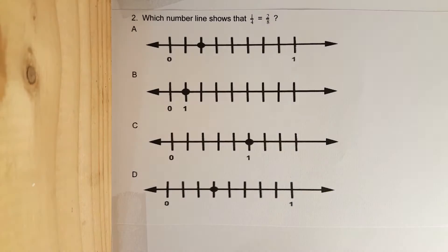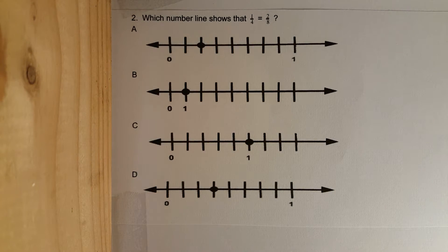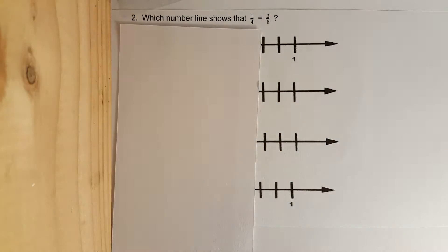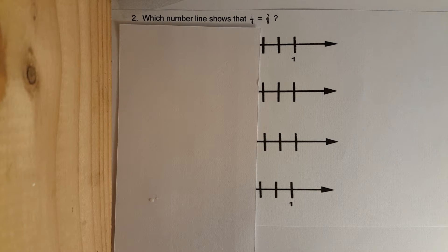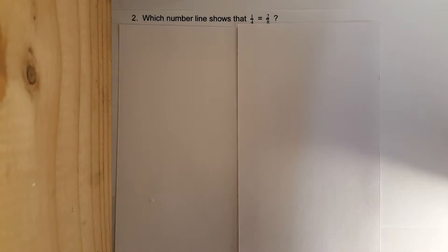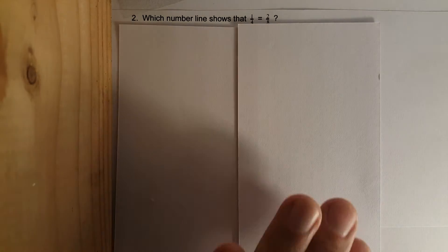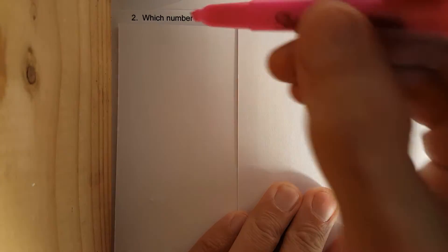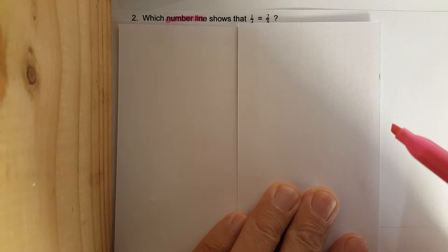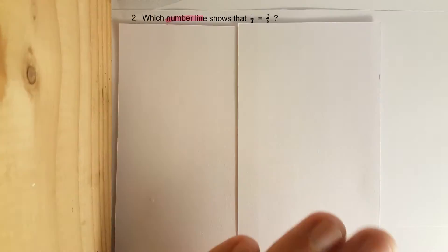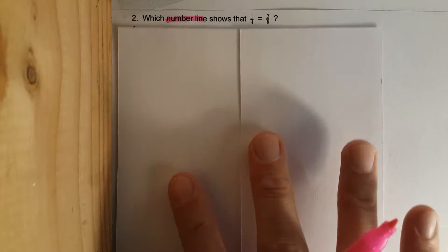To keep things simple: when you feel overwhelmed, cover up as much information as possible, then focus on one part at a time and pull away the index cards. First off — which number line shows that one over four is equal to two over eight?